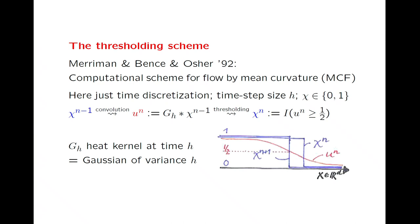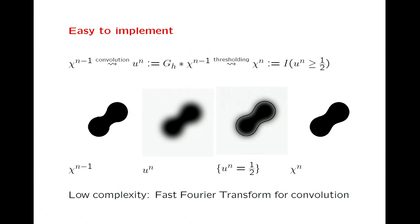Given the characteristic function of the set at time step n minus 1, you convolve it with the heat kernel at time h — equivalently, you solve the heat equation with these initial data for time h. You get a smooth function, then you look where this resulting function is less or larger than one-half, and that defines a new characteristic function or a new set.